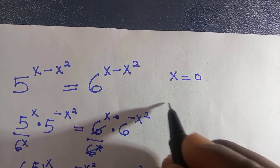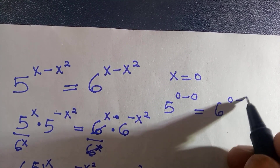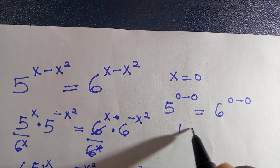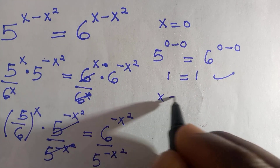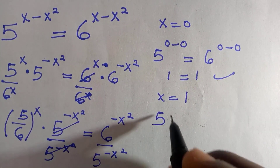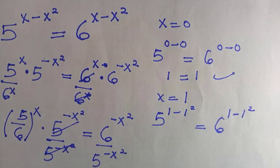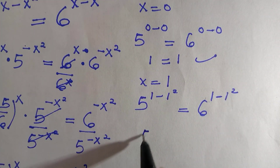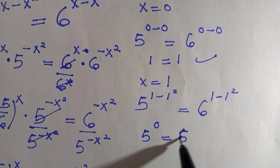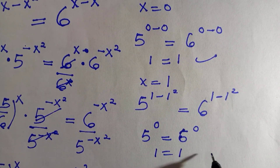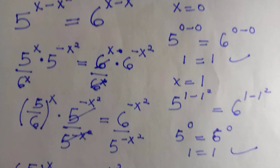Let's go for checking. At x equals zero: five raised to the power of zero minus zero equals six raised to zero minus zero, giving one equals one — so x equals zero satisfies this equation. At x equals one: five raised to the power of one minus one squared equals six raised to the power of one minus one squared, which gives five raised to zero equals six raised to zero, so one equals one — also satisfied.